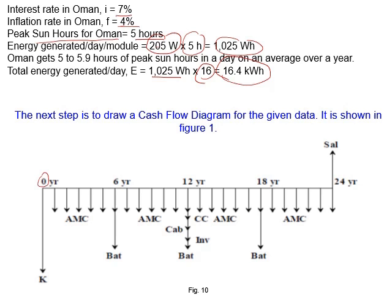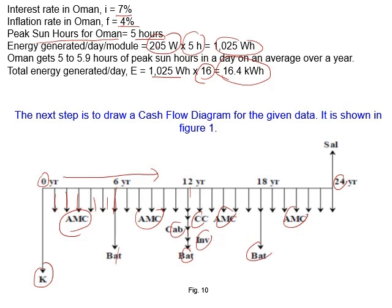At year zero, this is the capital cost. Every year — one, two, three, four, five, six — I pay annual maintenance costs, continuing until I reach 24 years. For the battery, every six years I need to change it. After 12 years, again battery — but also at 12 years I change cable, charger controller, and inverter. All these are costs going out (minus), while salvage is income (plus) — we sell part of the project at the end.